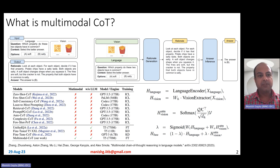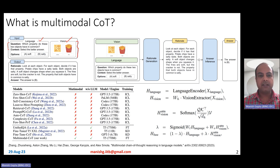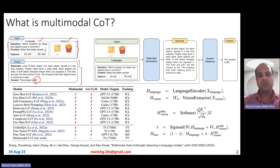Here is an example. If the input contains language and vision components where there is a question — which property do these two objects have in common — and then you have a context, select the best answer, and there are two options: soft and salty. There is also a vision part to the input where you have a cracker and fries as the two inputs. The expected output is: first generate a rationale, look at each object, decide if it has that property, and then finally generate the answer saying the right answer is salty.